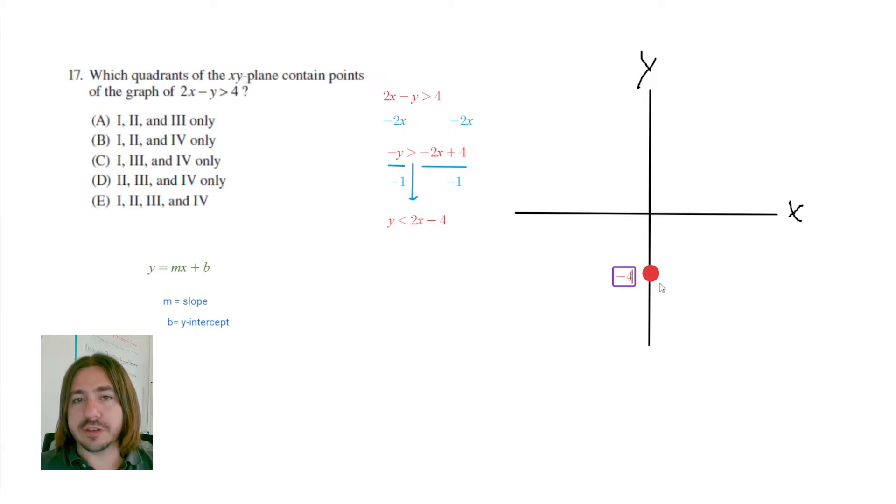The slope here is 2. So since the slope is 2, in order to find more points on this line, I need to go up 2 over 1. So up 2 would take me to negative 2, and then over 1 would take me to 1. So my next point that I can plot here is going to be up 2 over 1, roughly right here.